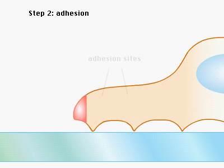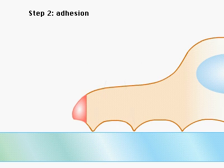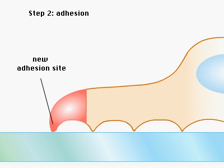In the next stage, the lamellopod adheres to the underlying surface using specialized membrane adhesion sites. Firmly anchored, the cell is now ready to generate the force to move the cell body forward.